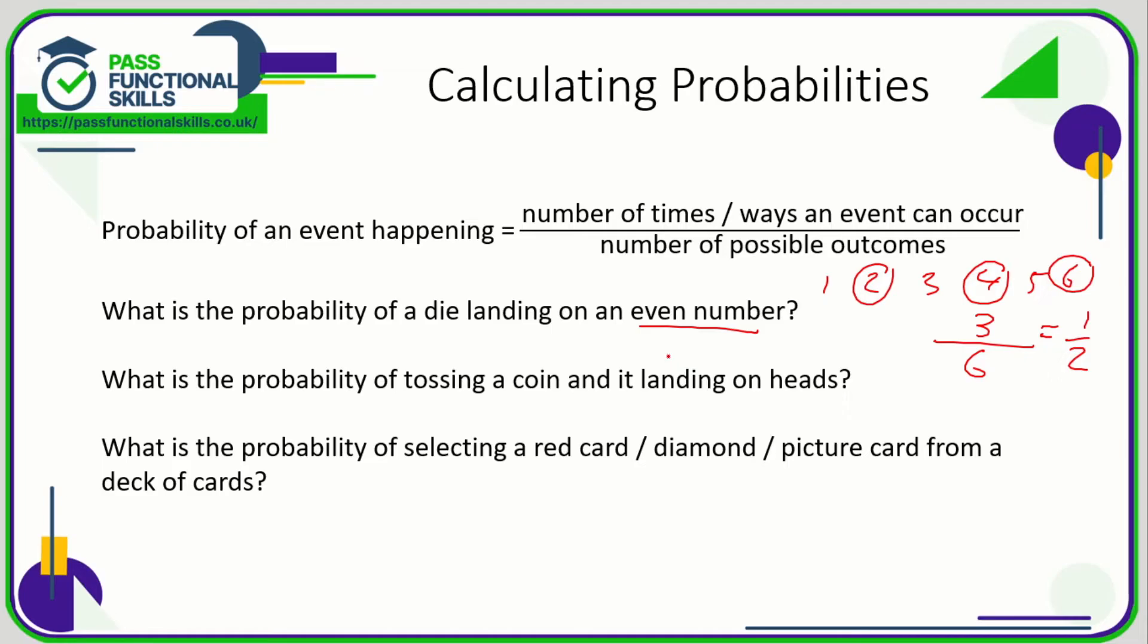What's the probability of tossing a coin and it lands on heads? Well, there's only two outcomes: heads or tails. So there's only one way it can land on heads, which is obviously by throwing a head. So one out of two, a half.